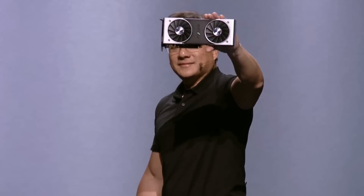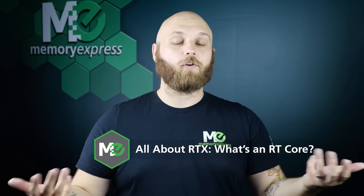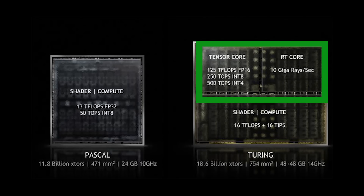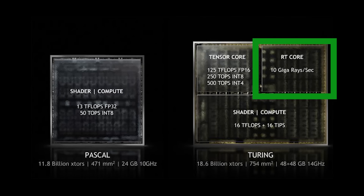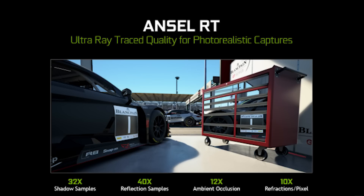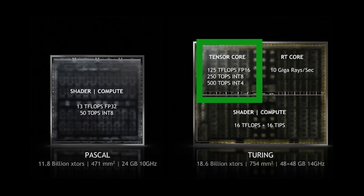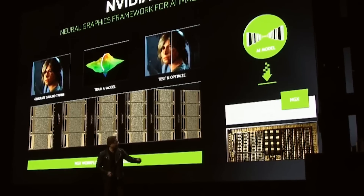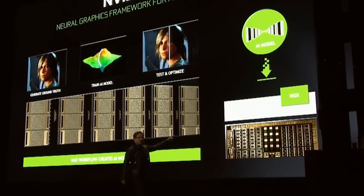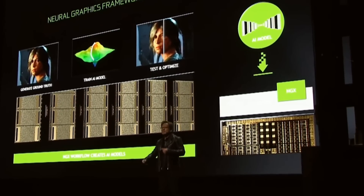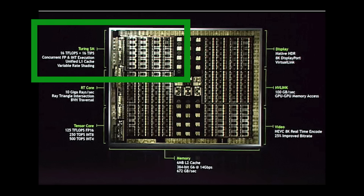Now let's take that time machine from yesteryear back to 2018 and talk about the Tensor core and RT core — they're dedicated workers for very specific tasks. First up is the RT core, or ray trace core — it's for light and shadow effects. The Tensor core is essentially a tool for machine learning and other future neural network-based research — smart game AI, essentially. We also have the Turing streaming multiprocessor for object shading and other execution.